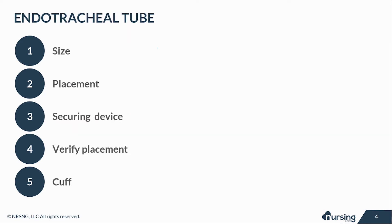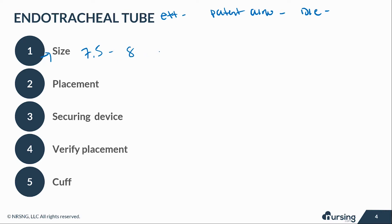When you have a patient who just got intubated or you're assuming care over somebody who has been intubated, you have to assess a few things. Always check that ET tube and make sure you have a patent airway — if not, your patient's not breathing and they could die. Check the size; ET tube sizes generally range from 7.5 to 8. Men usually have a bigger size than women. You don't want a 300-pound man with a size 6 ET tube — that's too small, like trying to blow air through a tiny straw.